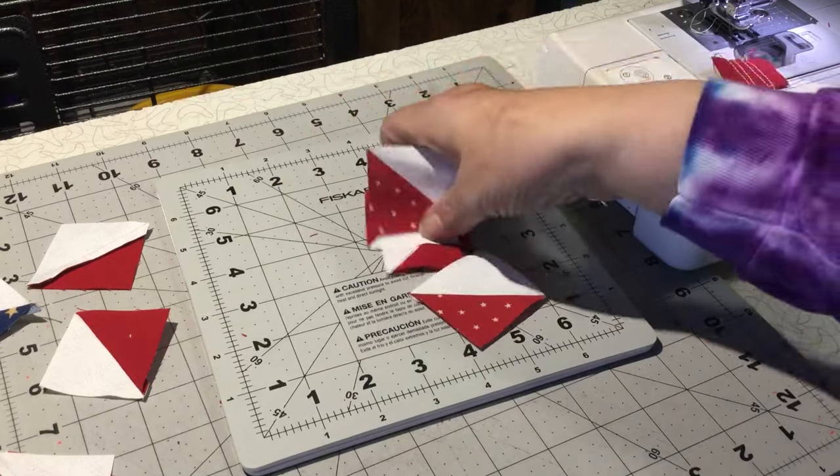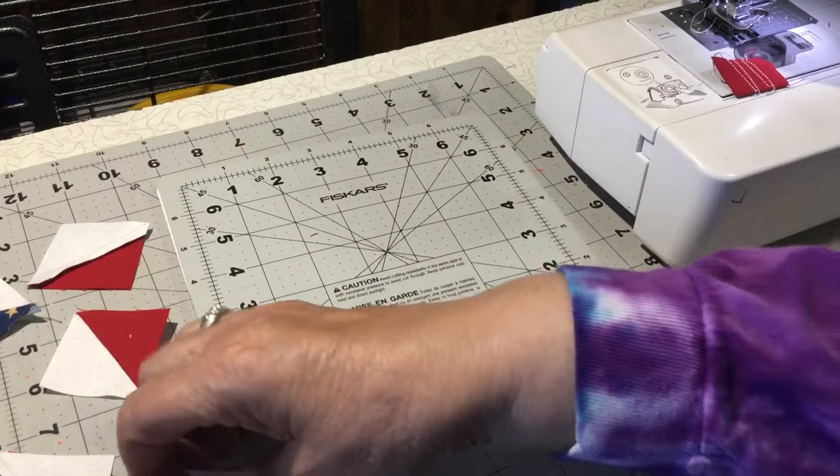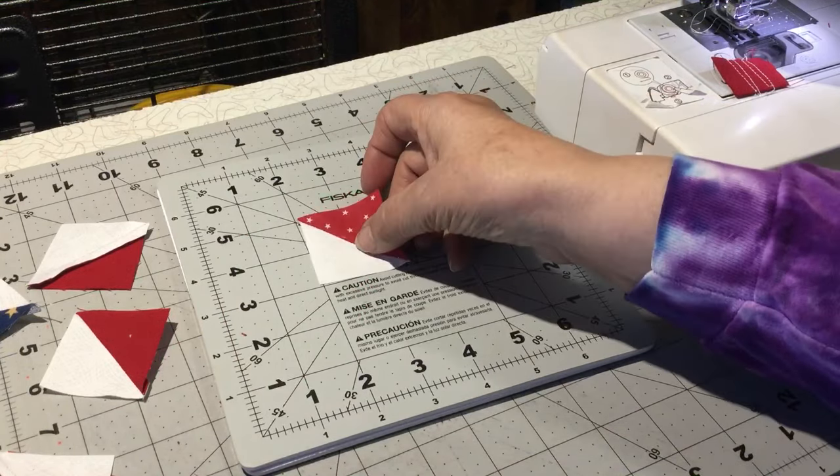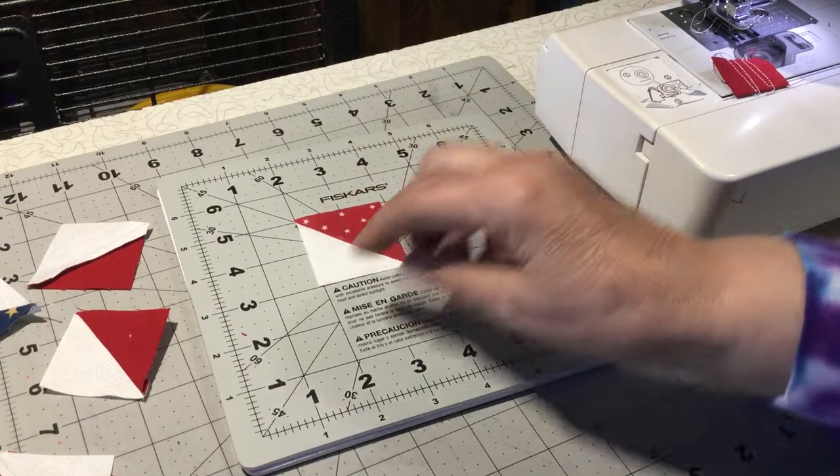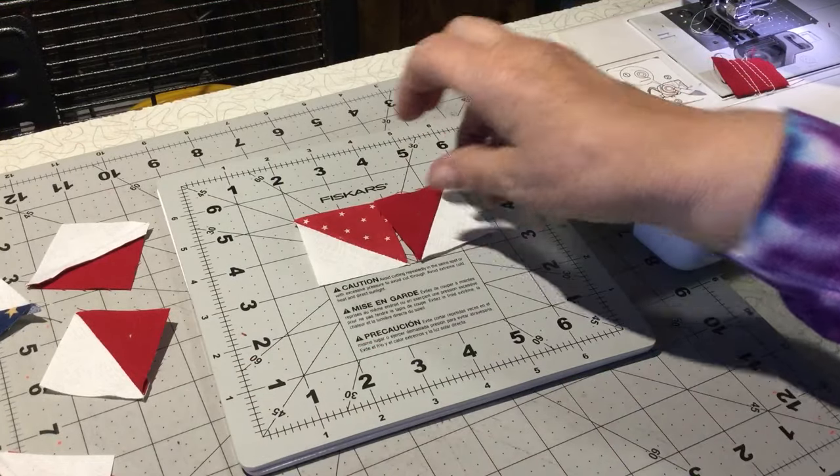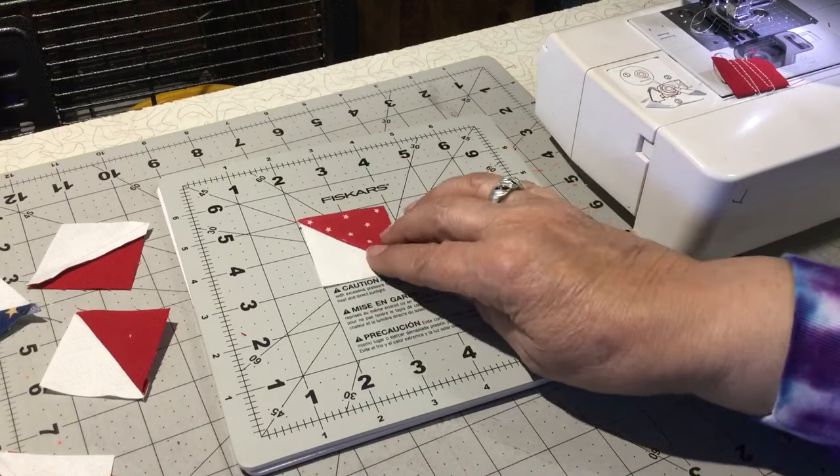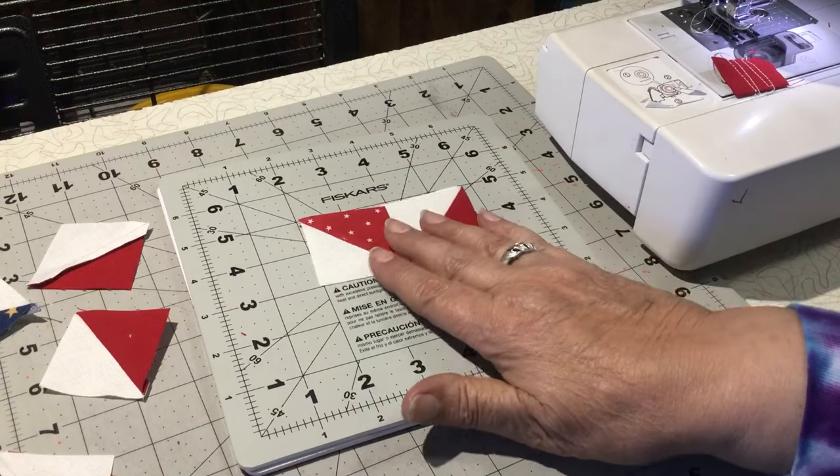And then I guess Jenny Doan just says, point them all to the middle. Okay, there's point to the middle. That's point to the middle, but you got red against red. So that means you have to point the other direction.